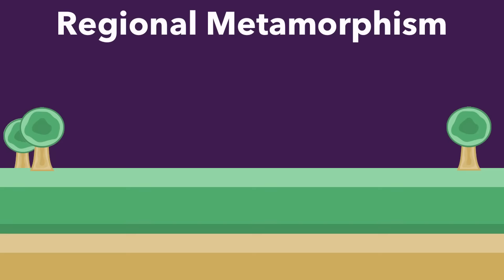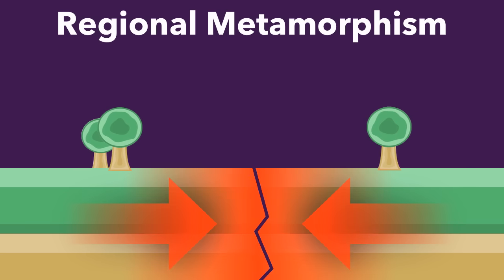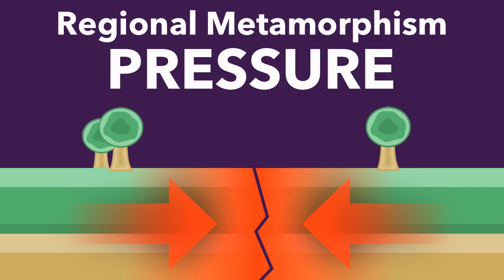Let's talk about the second type: regional metamorphism. This one is going to be more from pressure. Imagine that I have a plate boundary here — a fault, a crack — and that these two plates are coming together at a convergent plate boundary. As you can imagine, in the middle there's going to be immense, immense pressure, and that pressure can cause the rocks trapped in the middle to become metamorphosized. All along this boundary you'll find metamorphic rocks. This is different from contact metamorphism in that it's not so much about the heat — it's more about the pressure.